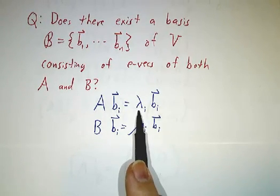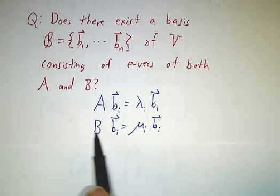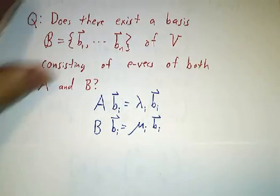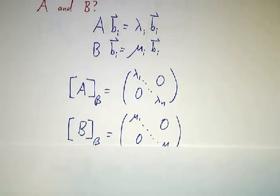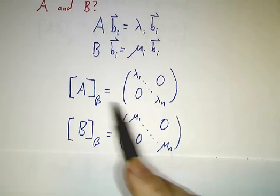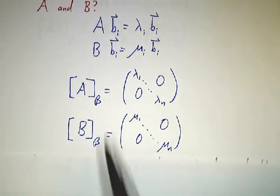and it's also an eigenvector of B, with maybe a different eigenvalue, but it's the same eigenvector. And that means that if you work in the B basis, A winds up being diagonal, and B winds up being diagonal, and that's why we call it simultaneous diagonalization of A and B.